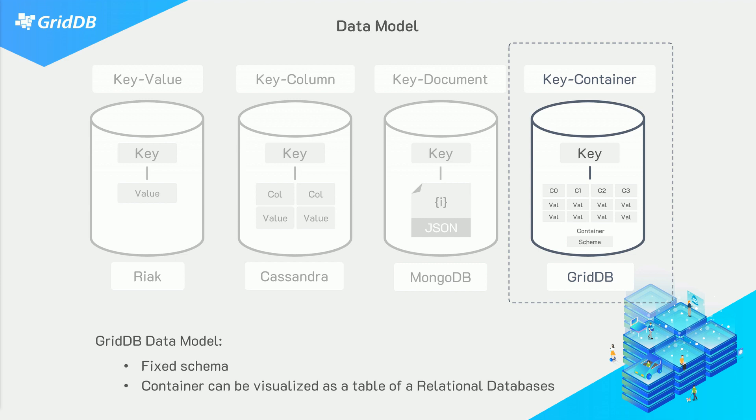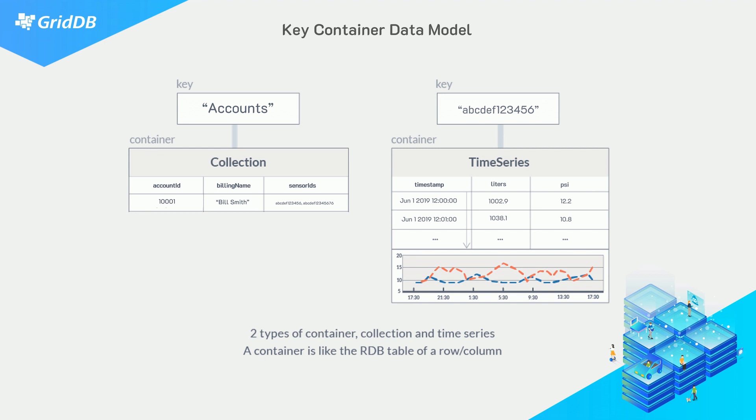In GridDB, data from one device, sensor, or input will generally be stored in one collection. This data model means GridDB also has a fixed schema, which brings benefits relating to availability and consistency. GridDB has two types of containers: a collection container and a time series container.